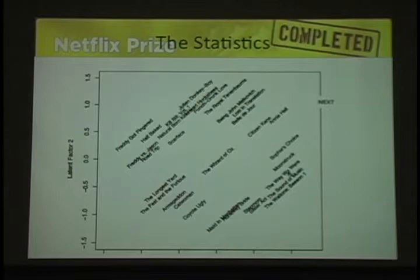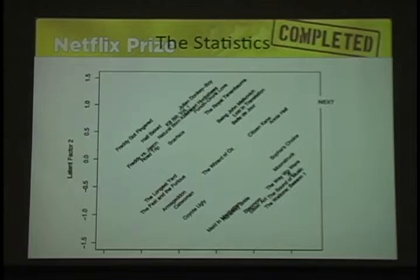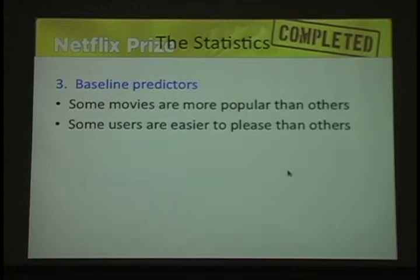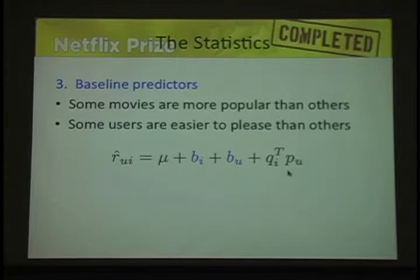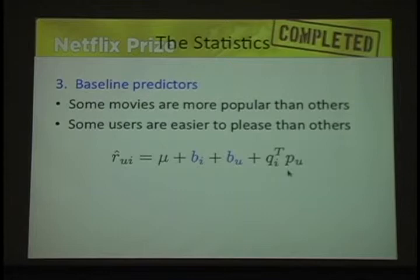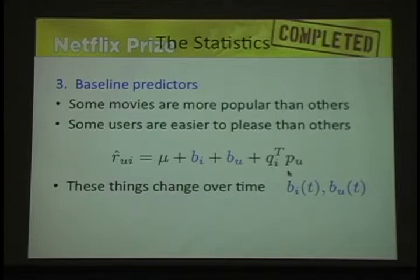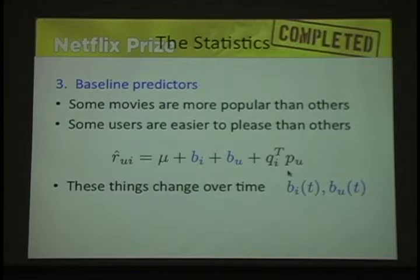The third part that made a very big difference was using some baseline assessment of the movies and users, brought in by the statistical part of the team working on factorization models. These baseline terms — the B's — are generic: some movies are just more popular than others, some users are just easier to please. They also allowed those to change over time and allowed latent factors to change over time. Now we have something that looks like a statistical model.